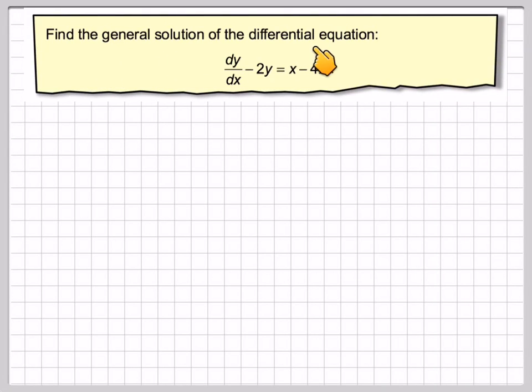Find the general solution of the differential equation: dy/dx minus 2y is equal to x minus 4x squared. So write down the equation.